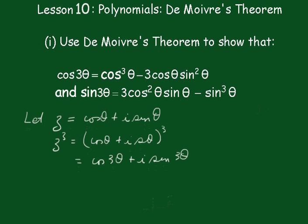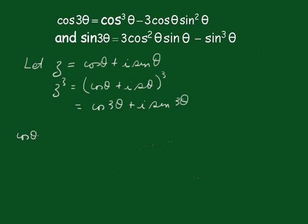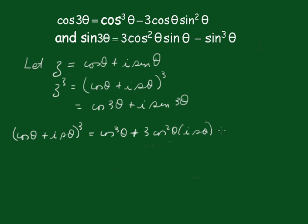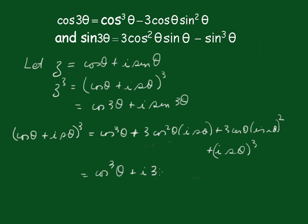Now equally, what we could have done is expand that out. Using Pascal's Triangle, (cosθ + i sinθ)³ equals cos³θ plus 3cos²θ · i sinθ plus 3cosθ · (i sinθ)² plus (i sinθ)³.